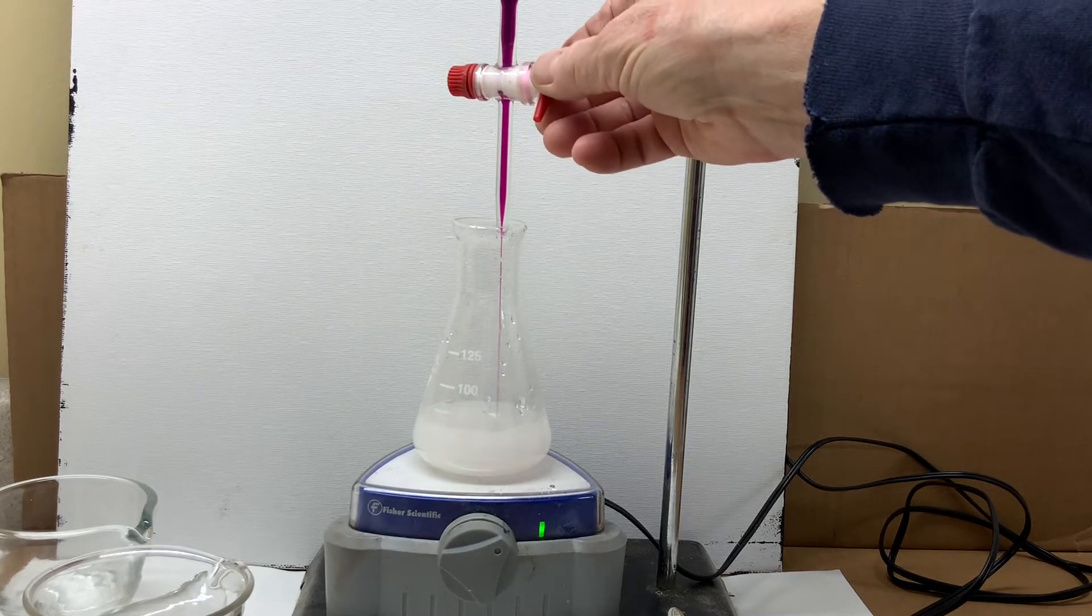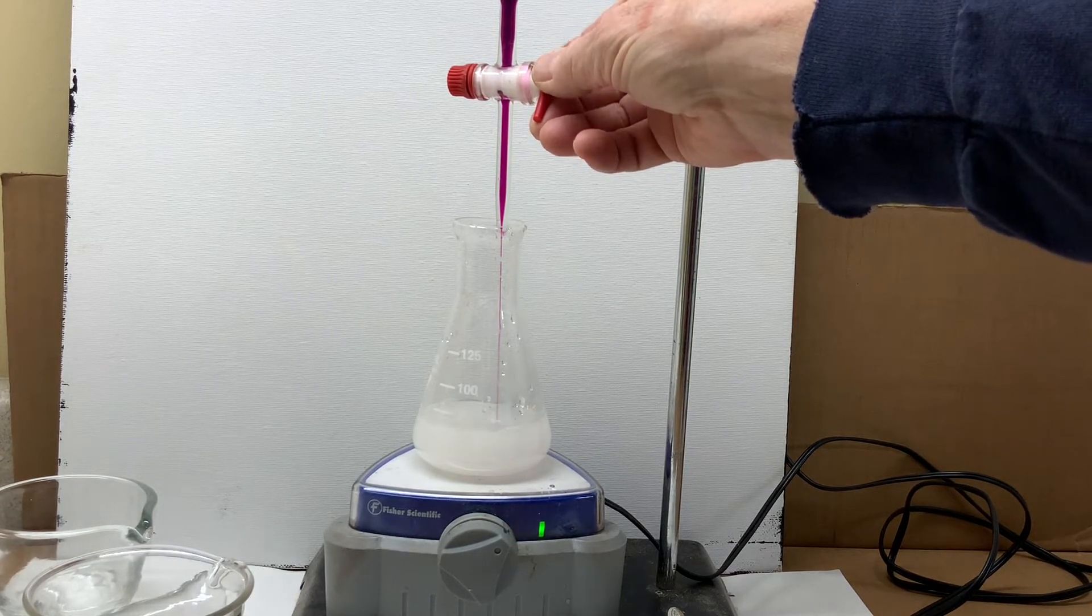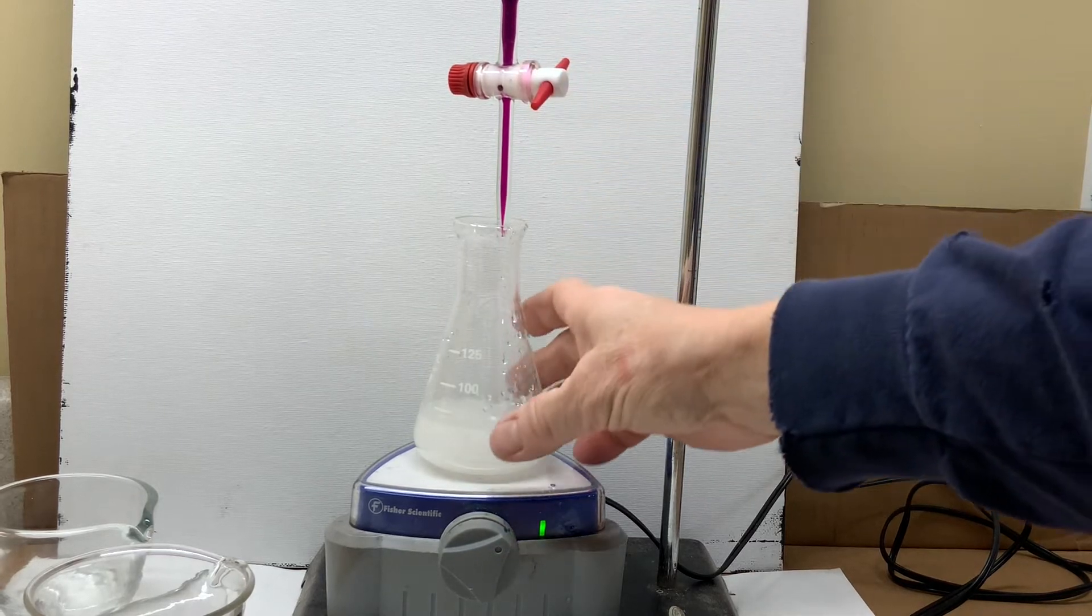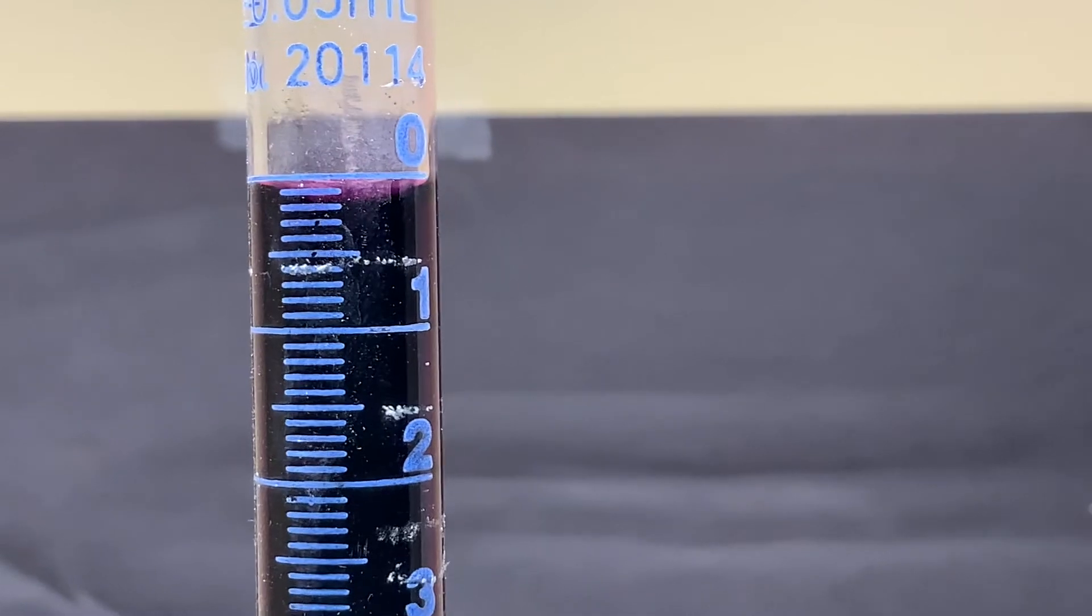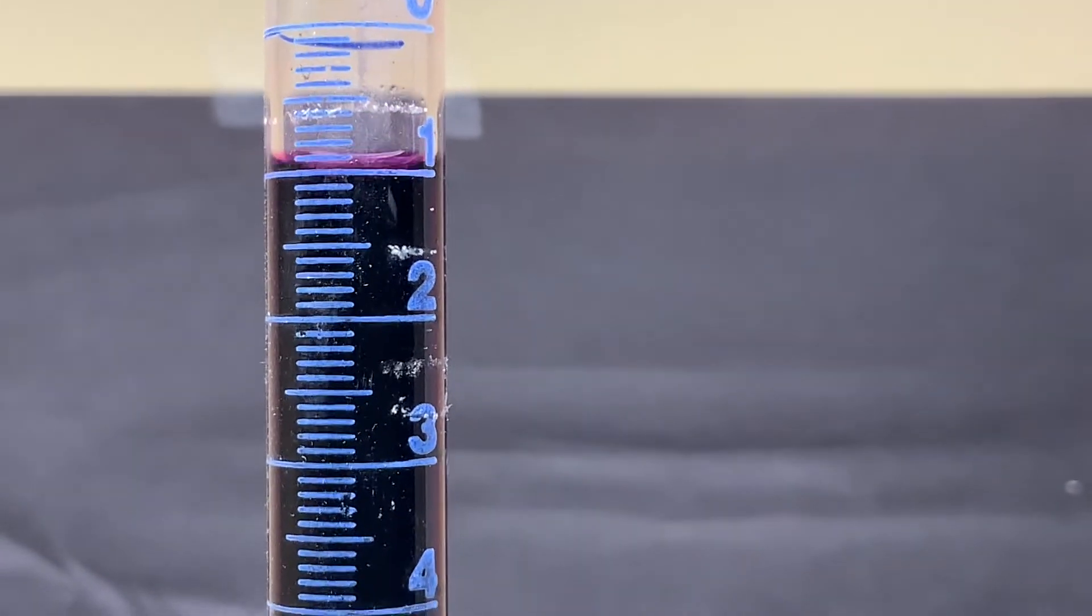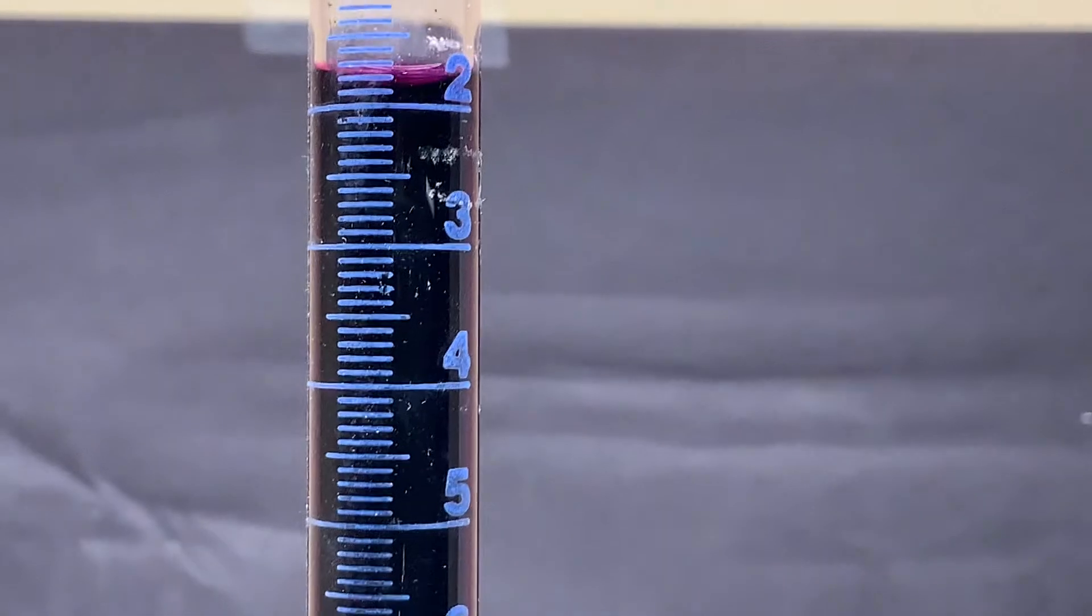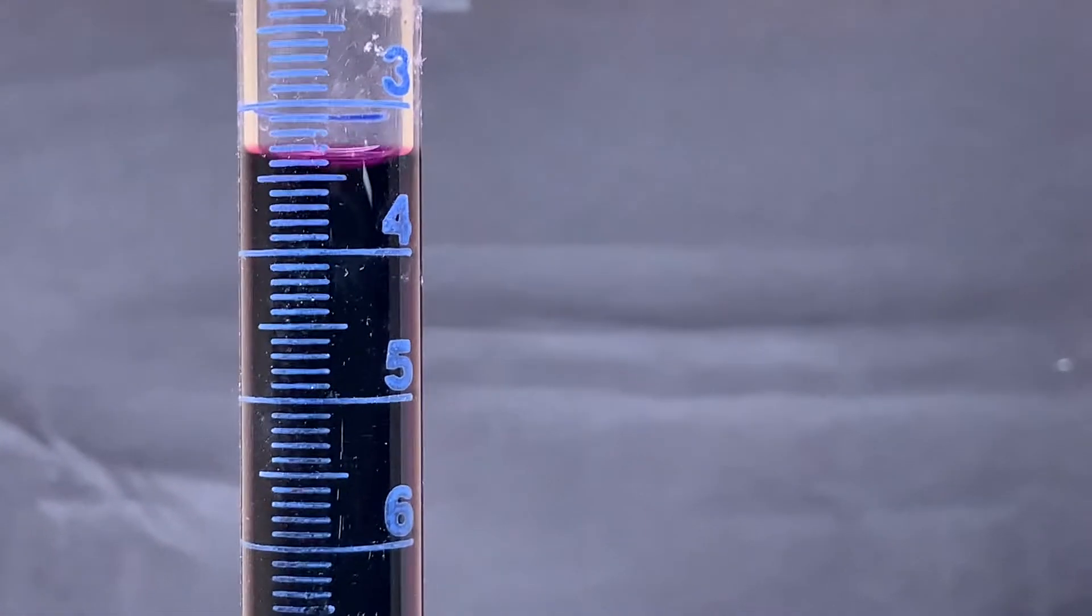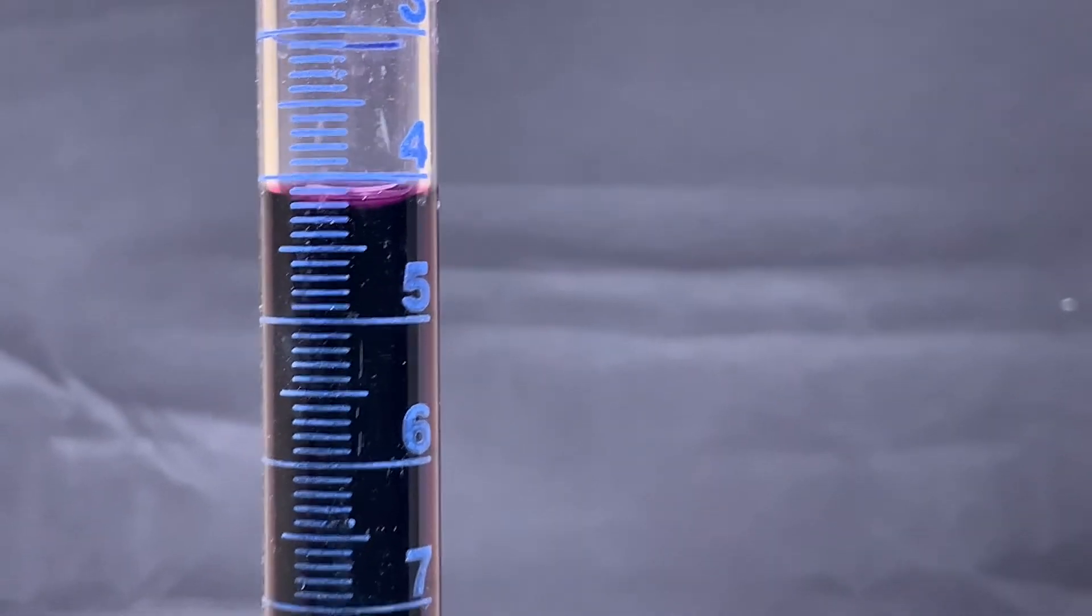Notice that the burette read zero at the beginning and we'll start to add the purple permanganate into the flask. You could see that the flask was cloudy. This is caused by so many insoluble substances that are also in the tablet and so we'll allow the permanganate to run into the flask.